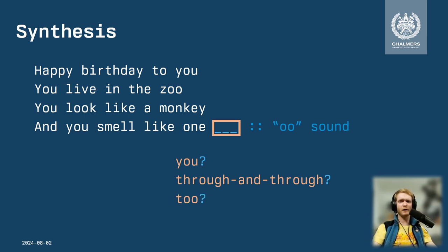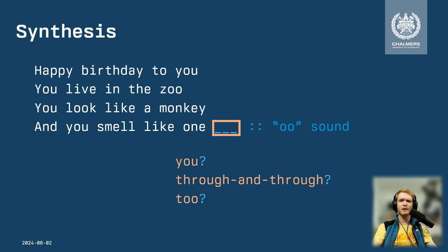But do they all work? If we say 'you smell like one, U' — we're repeating the 'you' from before. So it works, but it doesn't really fit what we want. Usually when we rhyme in a song, we want to use different words.